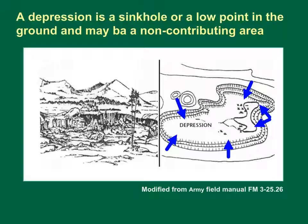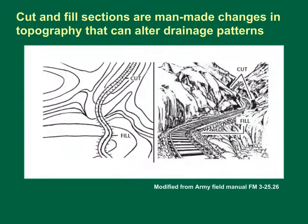Surface mining can cause depressions. The blue arrows superimposed on this figure represent potential flow directions into a depression. Unless there is a surface water outflow, depressions are non-contributing areas for calculating storm flows.